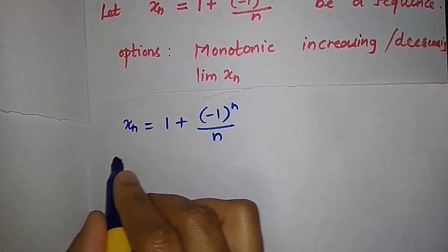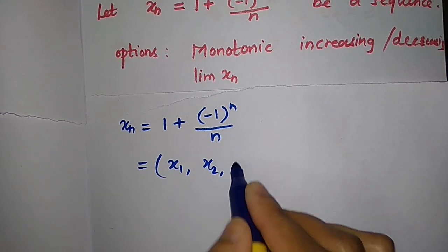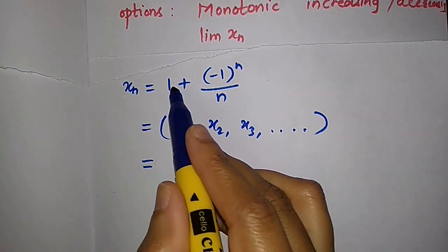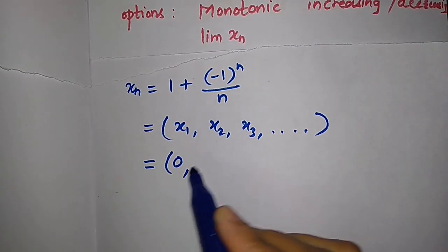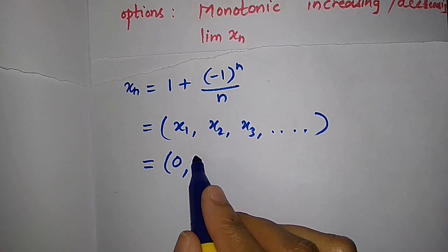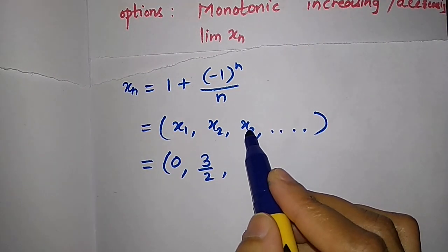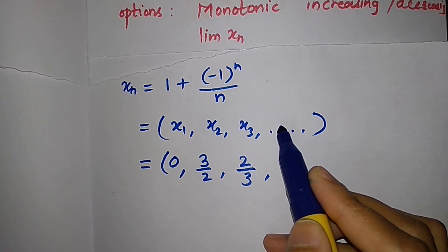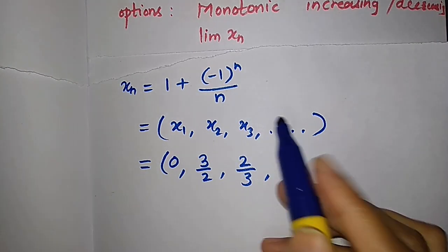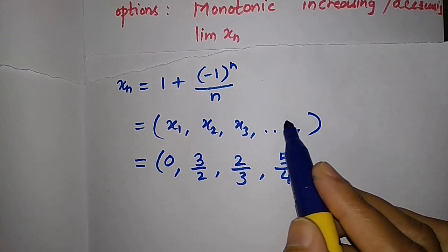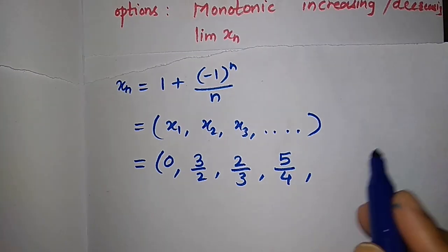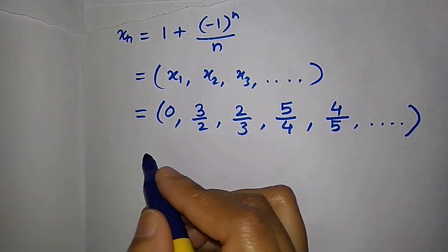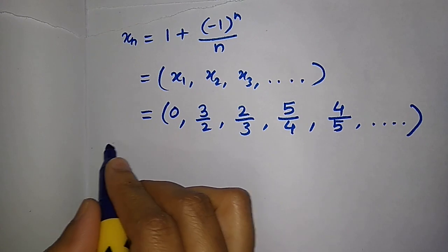Let us write down the terms of the sequence. x₁: put n=1, we get 1 - 1 = 0. x₂: put n=2, we get 1 + 1/2 = 3/2. x₃: put n=3, we get 1 - 1/3 = 2/3. x₄: put n=4, we get 1 + 1/4 = 5/4. x₅: put n=5, we get 1 - 1/5 = 4/5, and so on.